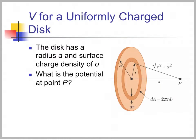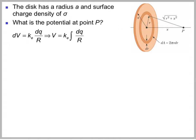What about a uniformly charged disk? Say I have a disk with radius a and surface charge density sigma. The little bit of potential at point P due to the little bit of charge is V equal to kdq over r. In this case, dq is sigma dA, and from the picture, dA is 2 pi r dr.